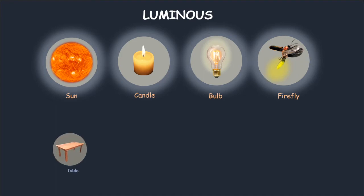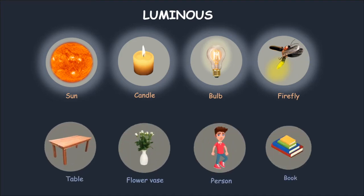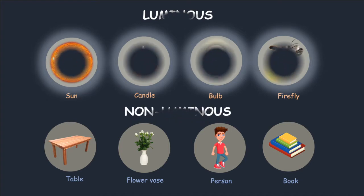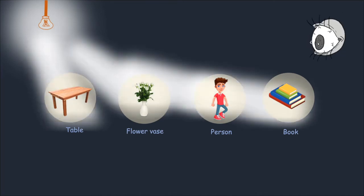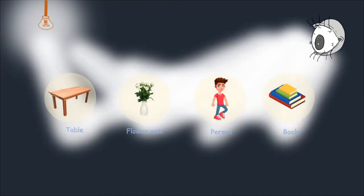Objects like tables, flower vases, persons, and books do not emit light and are known as non-luminous objects. How do we perceive these objects? The answer is reflection of light from these non-luminous objects.